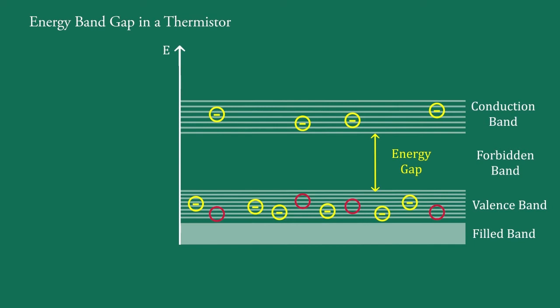Absorption of energy by semiconductor can boost electrons from the valence band to the conduction band if the energy is at least as large as the energy gap. As the temperature rises, some electrons get enough thermal energy to jump into the conduction band.